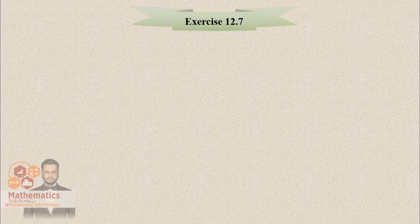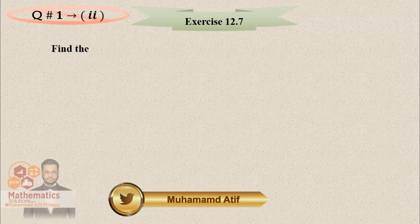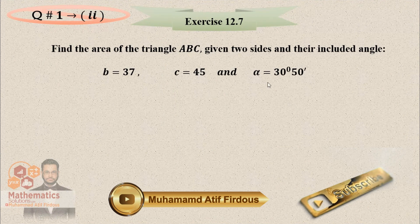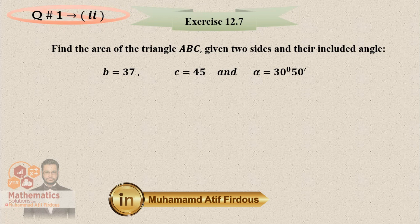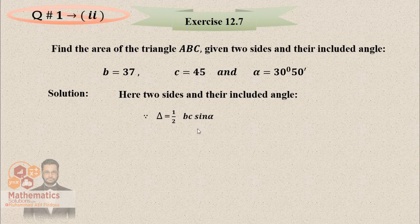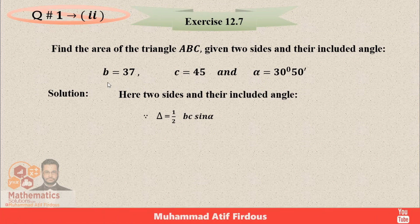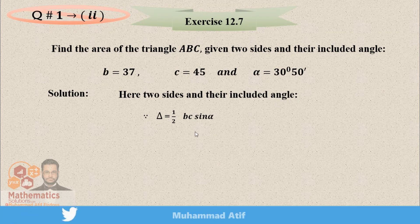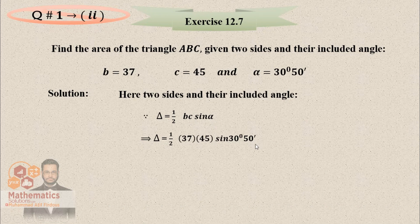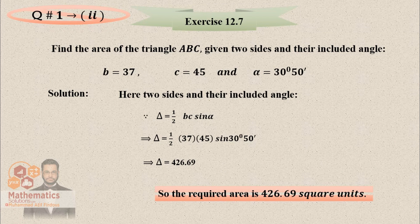The second part: find the area of a triangle with two sides b = 37, c = 45, and given angle alpha = 30 degrees 50 minutes. Use the formula: delta = (1/2) bc sin(alpha). Replace the values of b and c: b = 37, c = 45, and alpha = 30°50'. Use your calculator to multiply 37 × 45 × sin(30°50') divided by 2. The answer is 426.69. Write your answer as 426.69 square units.